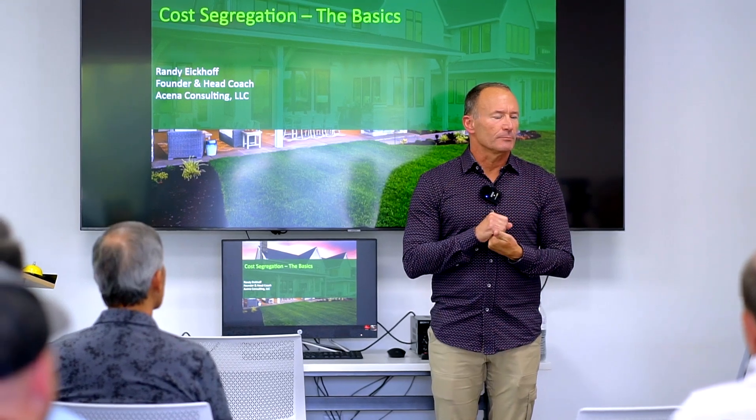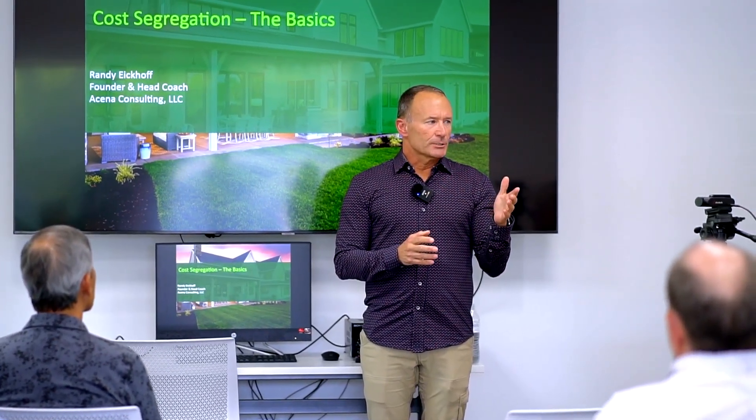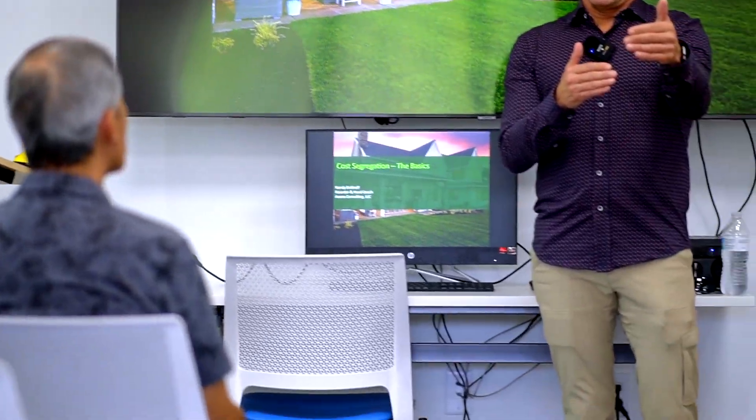We're going to talk about cost segregation, and more generally, real estate — which, as many of you know, is probably one of the best vehicles for building wealth in the tax code. The things we're going to talk about are things the government wants you to take advantage of. We're going to talk about some accounting concepts, and hopefully it will resonate how those ultimately turn into cash, which can then be reinvested and continue to build things. If you do this correctly, you never pay taxes. And there are very few strategies like this left in the tax code.